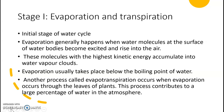Another process called evapotranspiration occurs when evaporation occurs through the leaves of plants. This process contributes to a large percentage of water in the atmosphere. Evaporation and transpiration together are referred to as evapotranspiration, which is how most textbooks describe this combined stage.